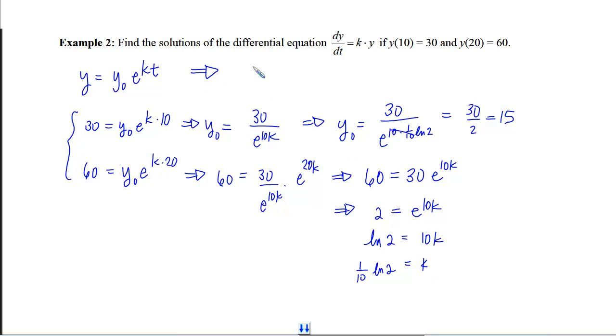Now that I have my y initial and I have my k, I'm ready to write my solution, which is y equals my y initial times e to the k times t. And again, put that t out in front so that you don't inadvertently think that it belongs inside the log.